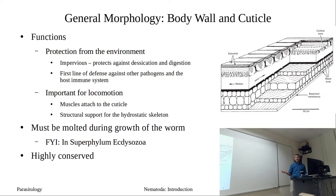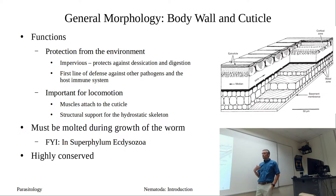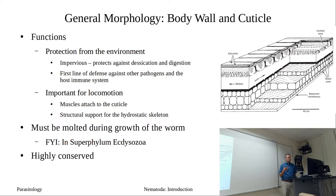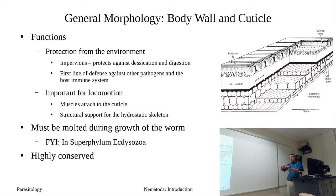An important feature for nematodes is that in order for the worm to grow, the cuticle has to be molted — just like an insect, crab, or crawfish must molt to grow because they have an exoskeleton. This is why this group, based on gene sequence analysis, falls into a superphylum called Ecdysozoa because of its ability to molt. In terms of cuticle structure itself, it's highly conservative — we see only minor variation between species, with the exception of the angles and number of layers in the basal zone.